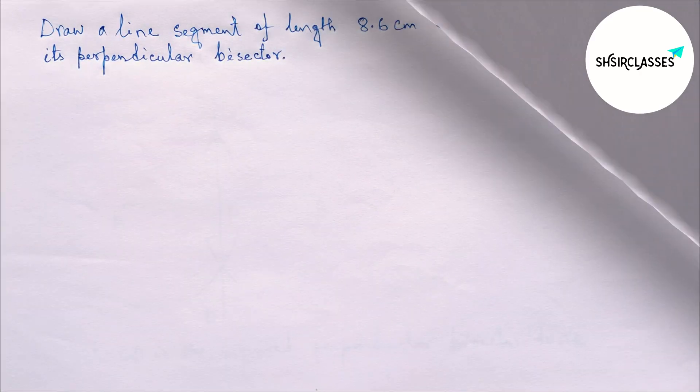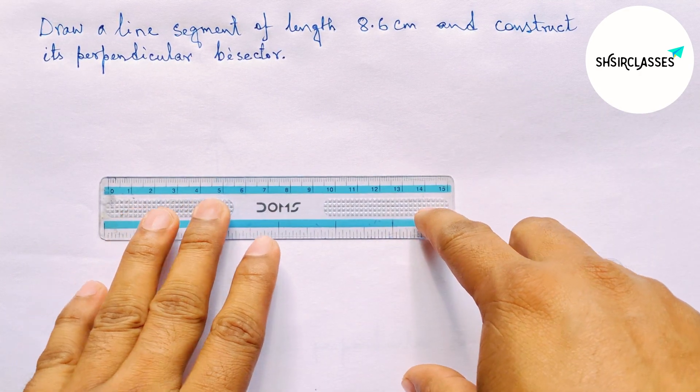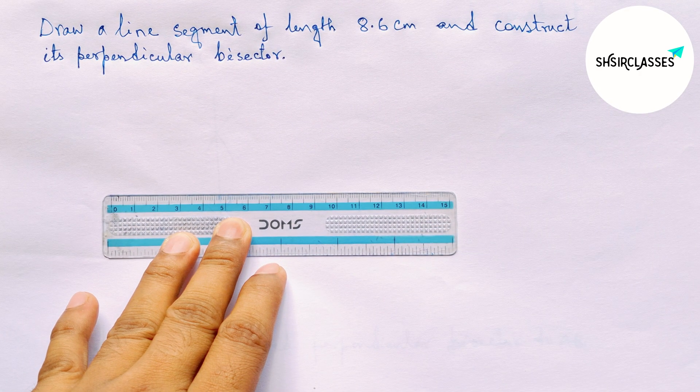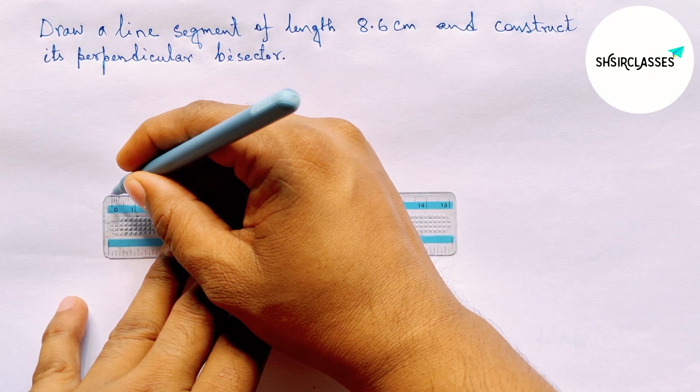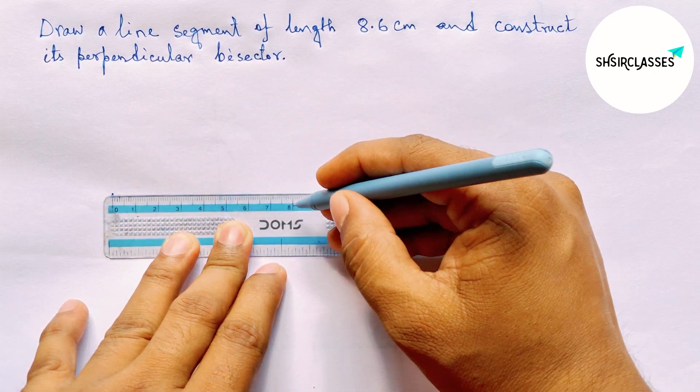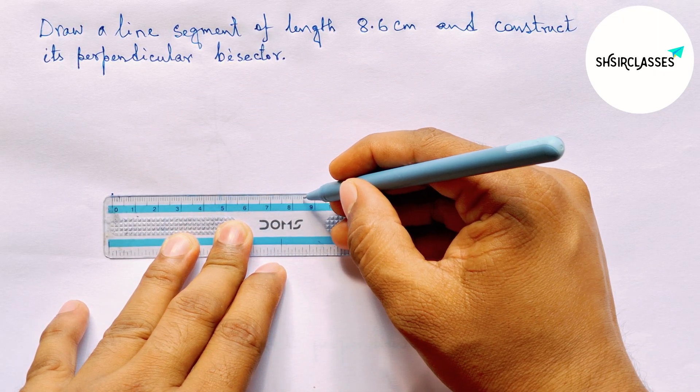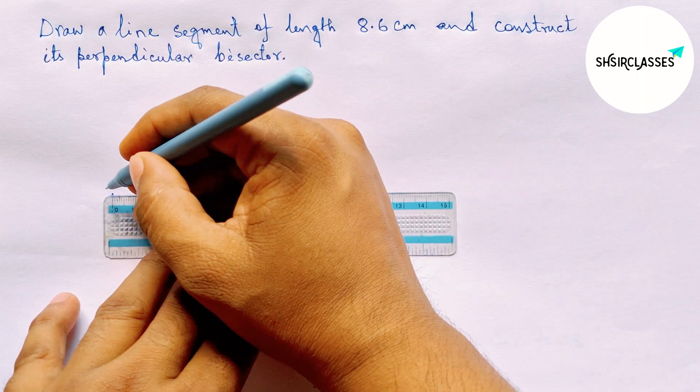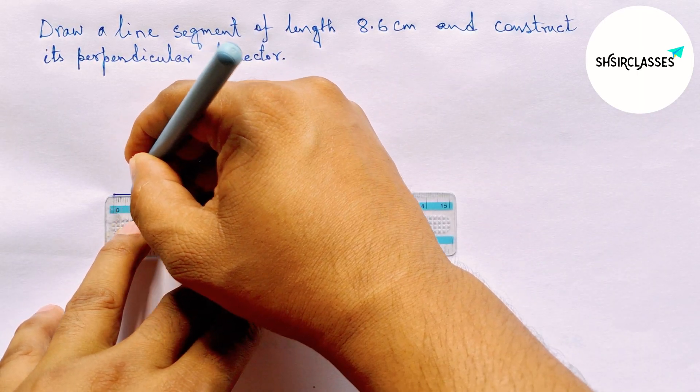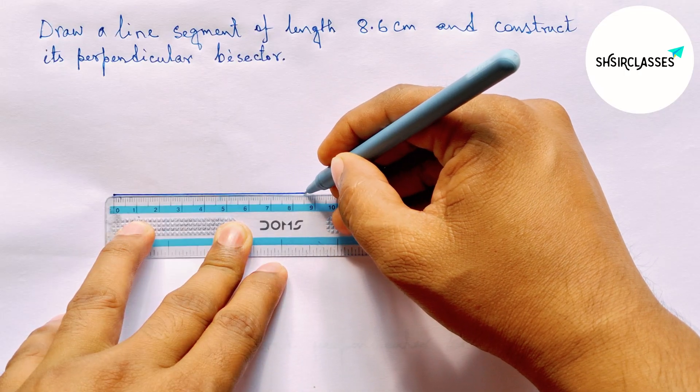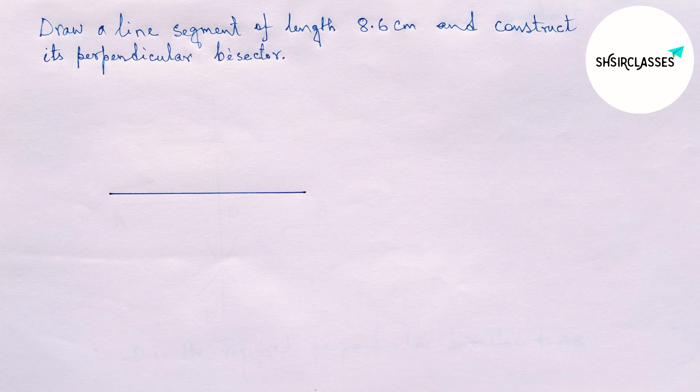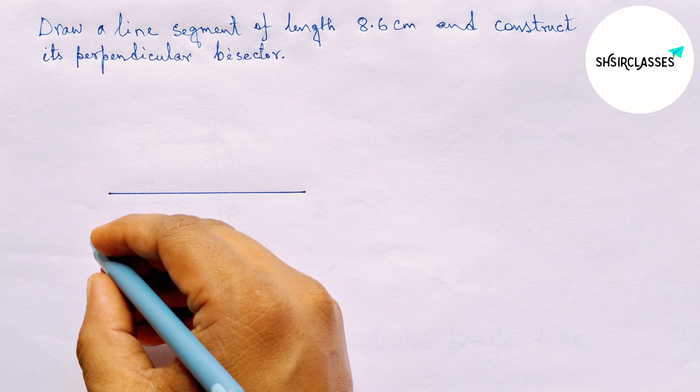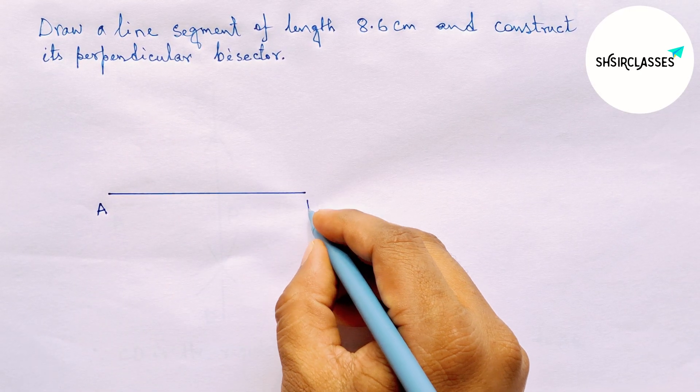Let's start the video. First of all, let us draw here a line segment of length 8.6 centimeters. So here 8, and here 8.5, then counting one more, so 8.6. This is an 8.6 centimeter line segment, labeling here A and B.